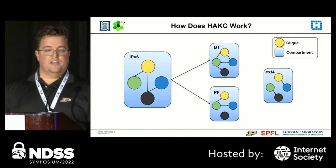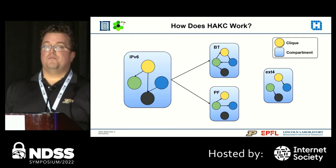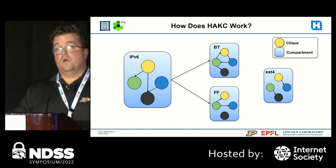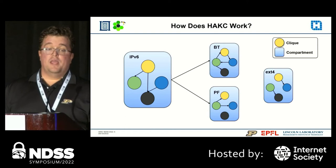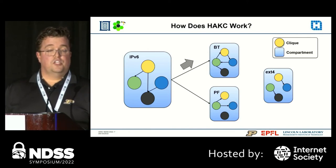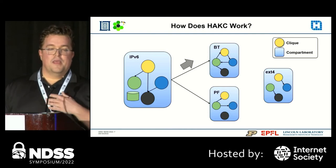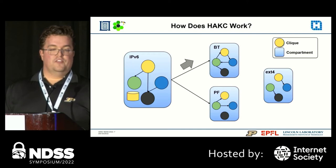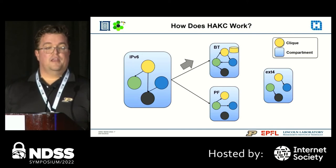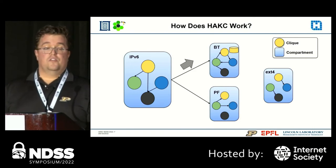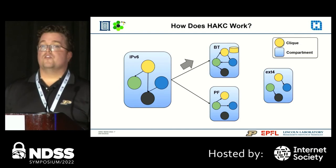HACKS enforces data ownership using PAC and MTE. All data must belong to the currently executing compartment and must obey the data access policy defined by the click in the compartment. When control flow needs to exit the compartment, data ownership must be transferred to the target click before control can flow to that click. Data ownership involves recoloring of the data using MTE and a pointer re-signing using PAC, using the target click color and compartment as the PAC context. While the target is executing, the data access policy in the target compartment is followed. When the target function returns, the data is recolored to its original color and re-signed to restore data ownership to the original click.